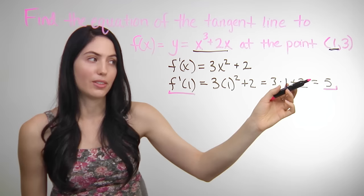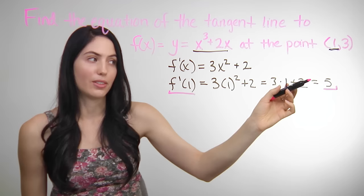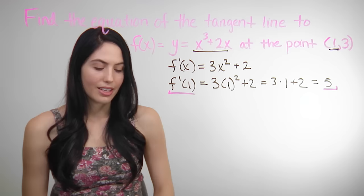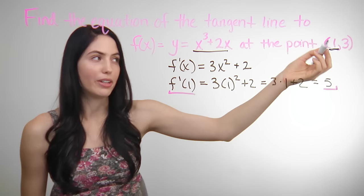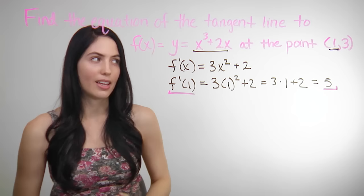So f prime of 1 equals 5. This is going to be your slope number that you'll use. The third step is to find the y coordinate of your point if you're not already given it. In this problem you're given the whole point, so you have y equals 3. You don't need to find y in this case — you can move on to the fourth step.